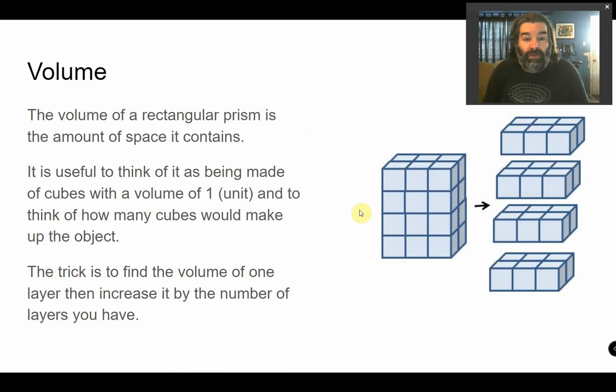Volume is how much space does an object contain. So when we look at it, if you're a visual person, it's usually easy to think of each level. Think of how many cubes each level has, and then how many levels are there. So the trick is to find the volume of one layer, then you increase it by the number of layers.